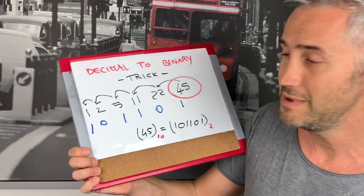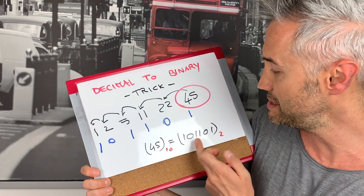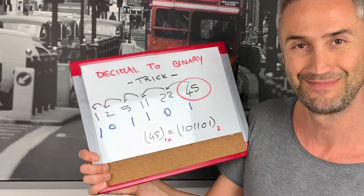So 45 is 1 0 1 1 0 1 in binary. Try it yourself — choose a number and try to convert it into binary. Once you do it, leave a comment below. Ok guys, see you next time, bye for now!